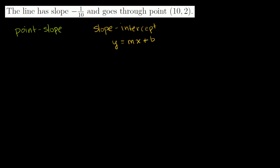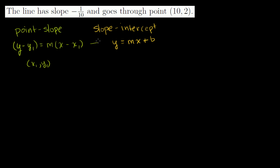In point-slope form, it takes the form y minus y1 is equal to m times x minus x1, where the coordinate (x1, y1) is a point on the line. That's why this is called point-slope form. These are just two different ways of writing the exact same thing — you can always algebraically manipulate one to get the other, and I'll show you that with a couple of examples.